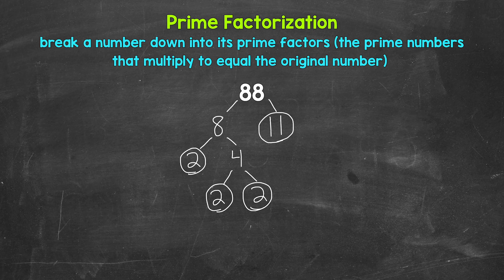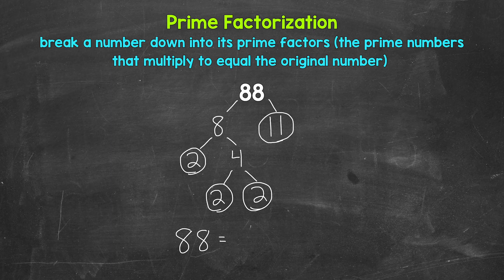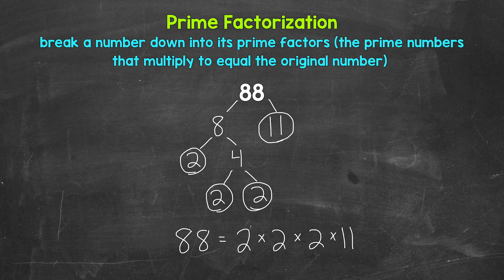And that's the prime factorization of 88 — we don't have anything else that we can break down any further. We have all prime numbers. So let's write this out: 88 equals our prime factors in order from least to greatest, and we are multiplying them. We have 2 times 2 times 2 times 11. If we have the correct prime numbers, they will multiply to equal our original number, so let's check.